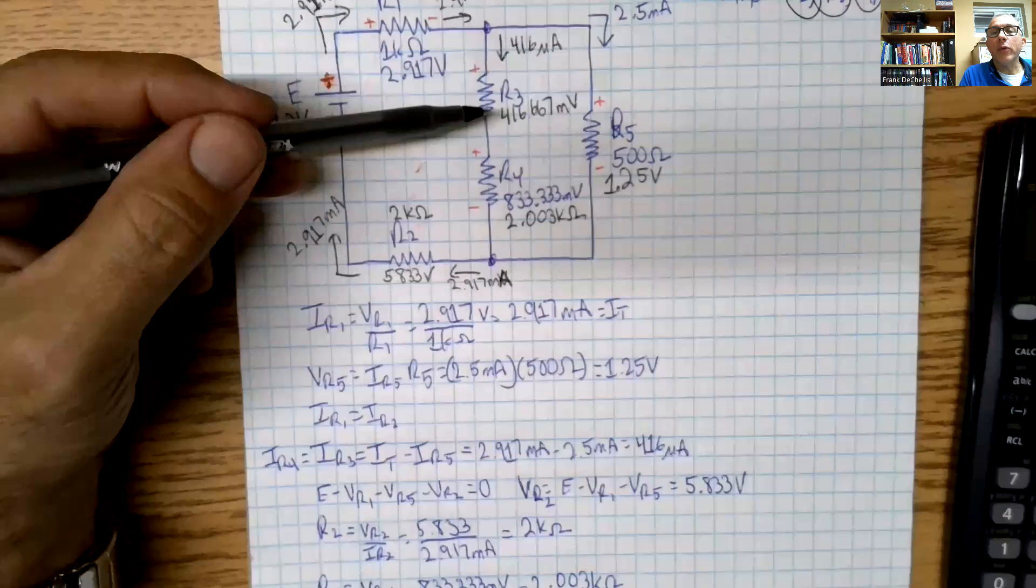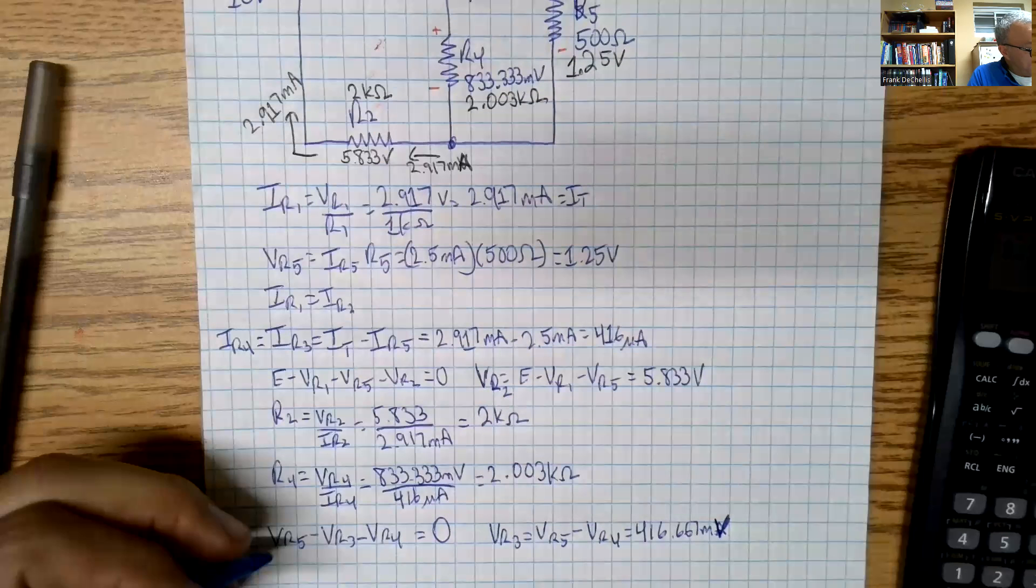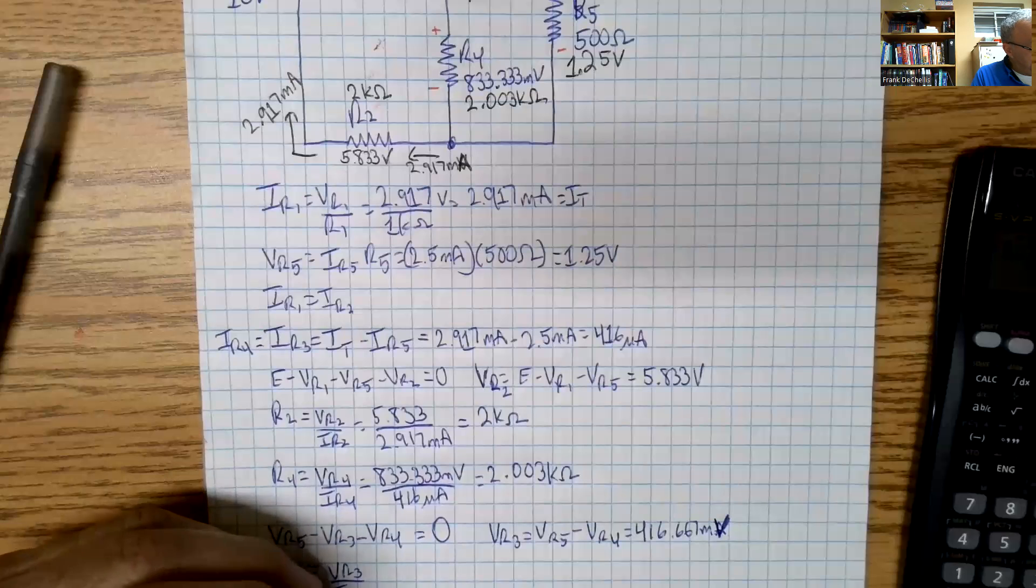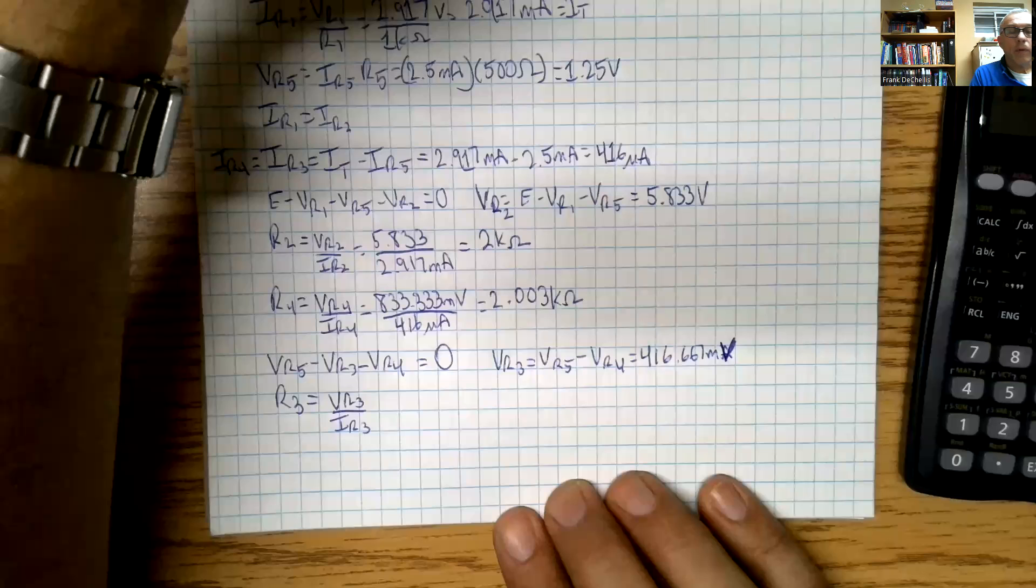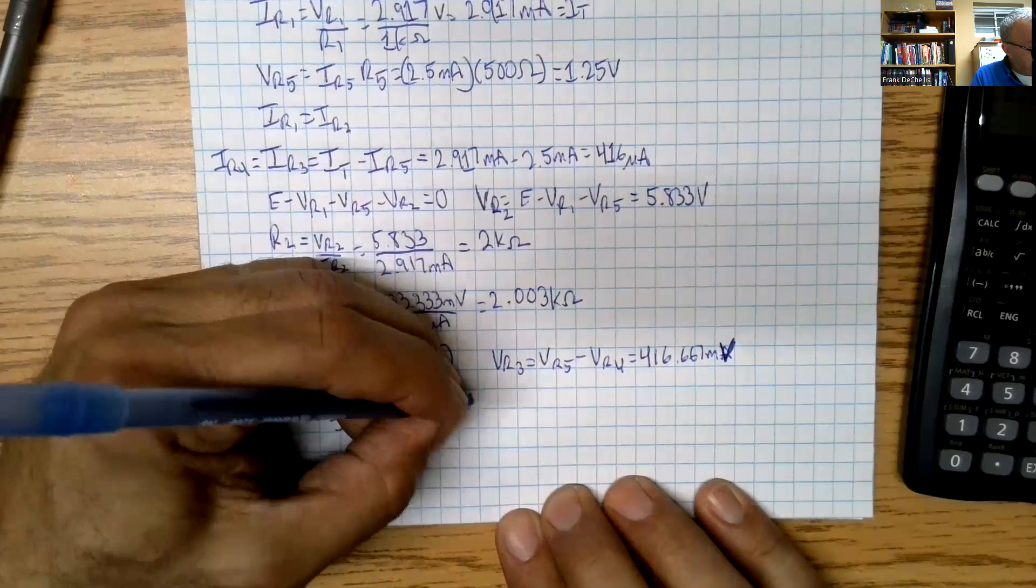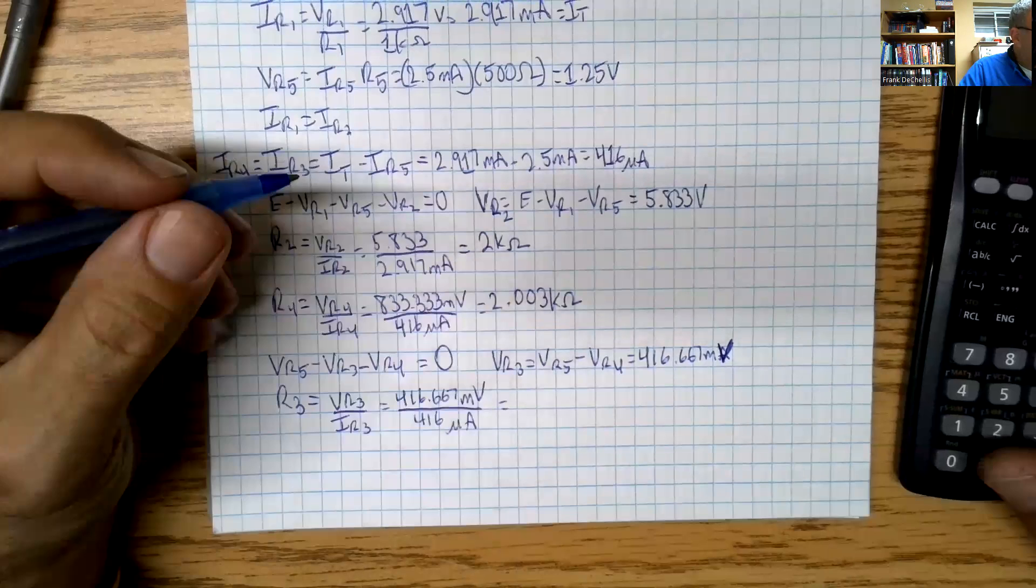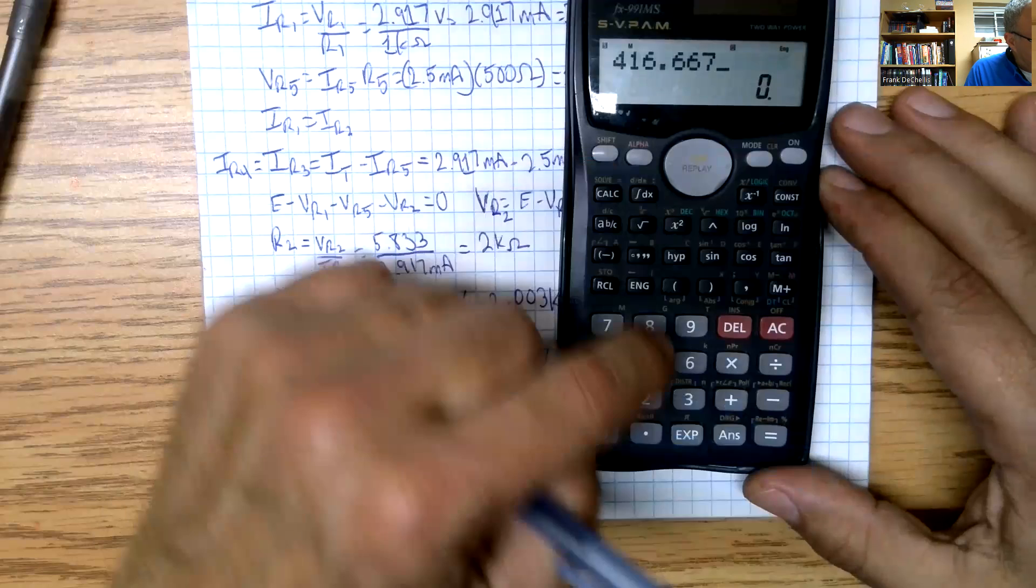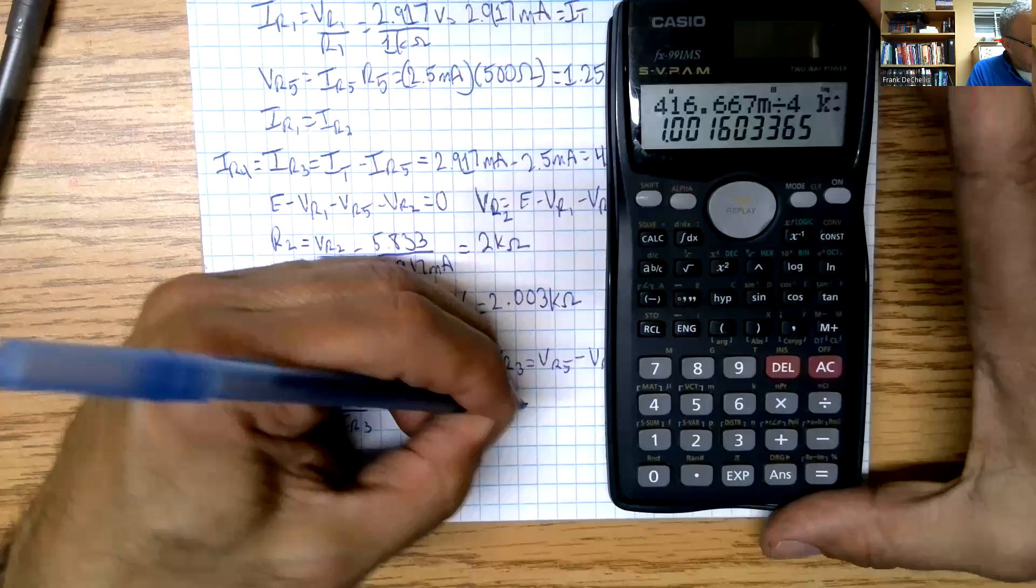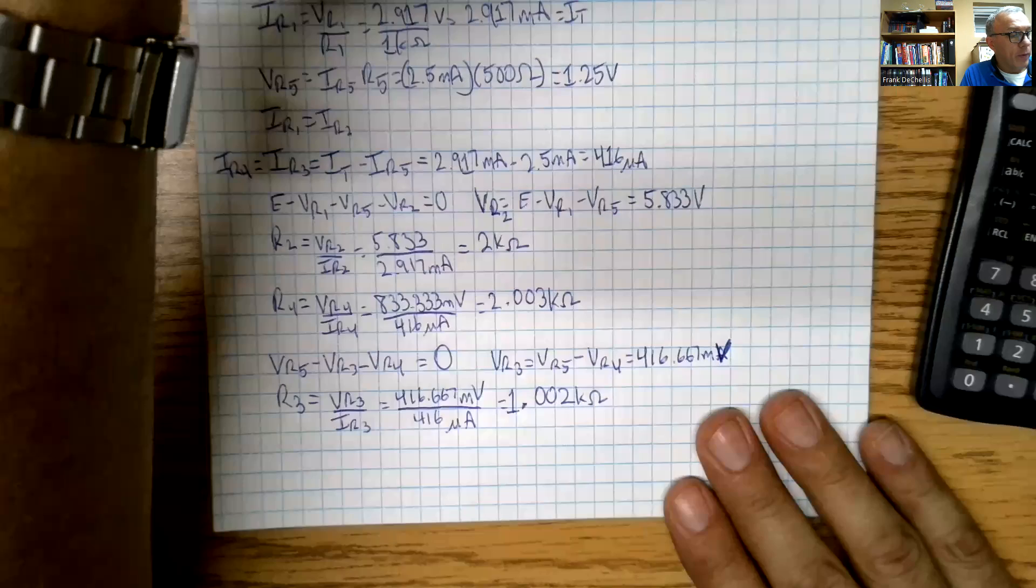We know the current through R3 and we know the voltage across R3. Now we can say that R3 is equal to VR3 divided by IR3, which is 416.667 millivolts divided by 416 microamps, which works out to 1.002K. If we're putting the circuit together, it would be 2K and 1K. And we eventually got to all of our requirements for that question.